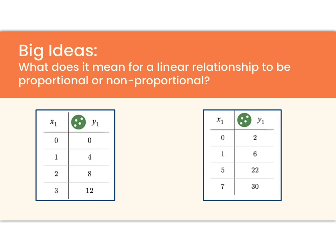What does it mean for a linear relationship to be proportional or non-proportional? I am going to start out answering this question by calculating the ratio of my y values to my x values. So I'm going to calculate y over x for each row of my table and see what happens.